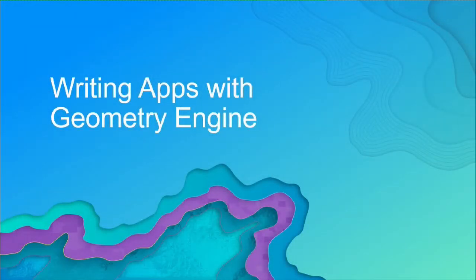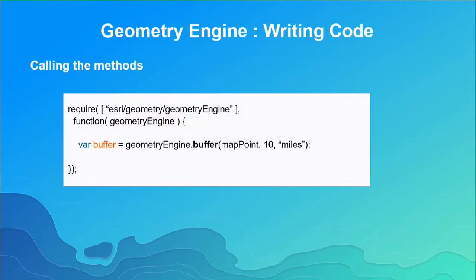Another thing to consider is how you write apps with the geometry engine. Working with it is as simple as loading the geometry module and making calls against it. Here we're doing a buffer with AMD, loading the geometry engine, taking the point and buffering it by 10 miles — you instantly get a result. It's a synchronous operation all happening at the same time. It's a very simple API, and we tried to match the same semantics and calling conventions as the other Esri SDKs.